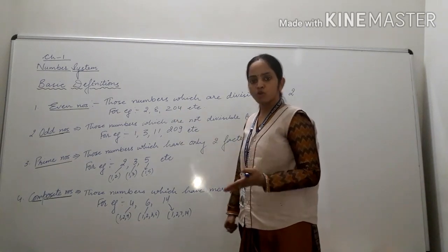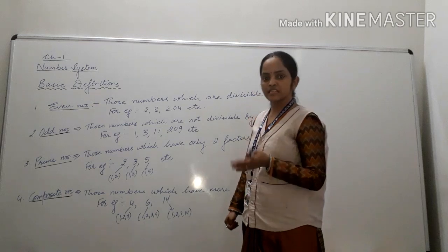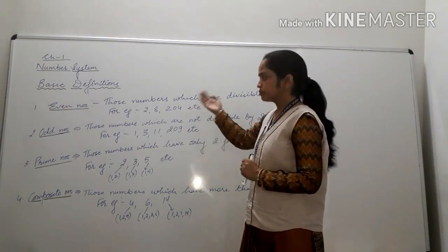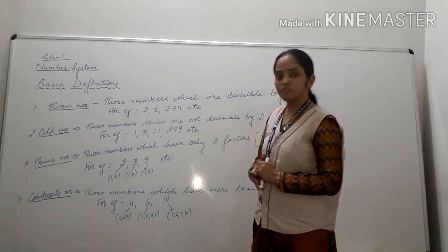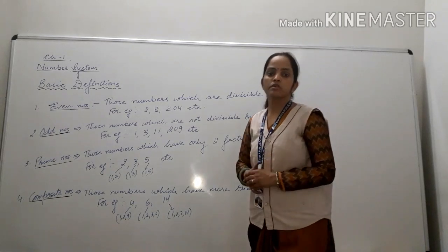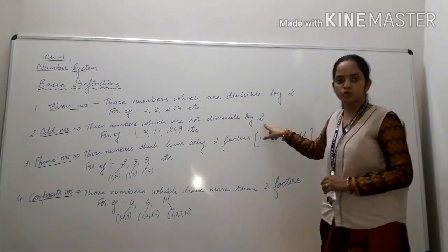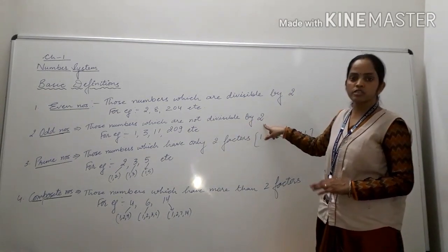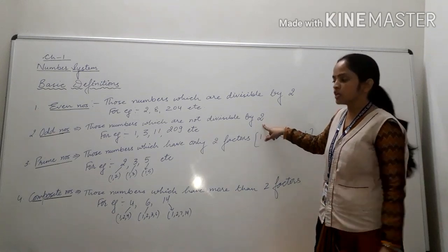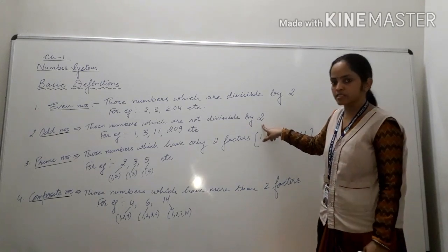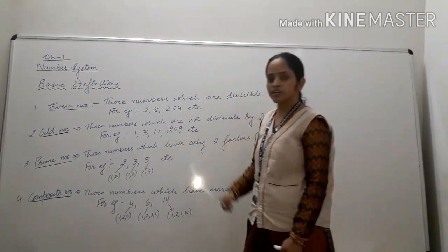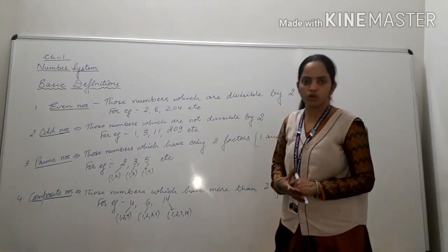For example, 2, 4, 6, 8 and so on. In the same way, what are odd numbers? Those numbers which are not divisible by 2 are known as odd numbers. Examples are 1, 3, 11, 209 and so on.